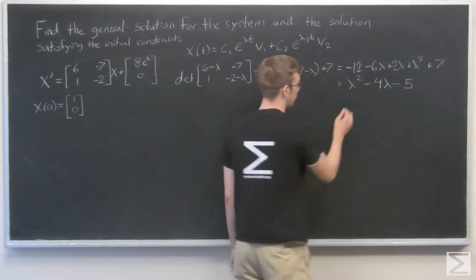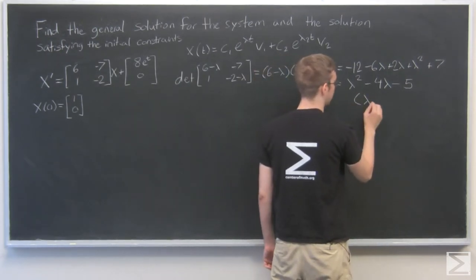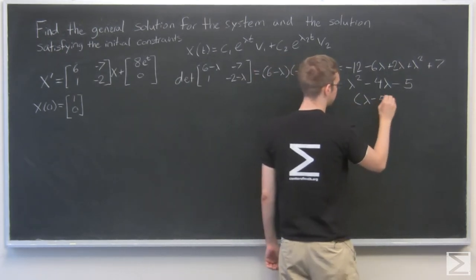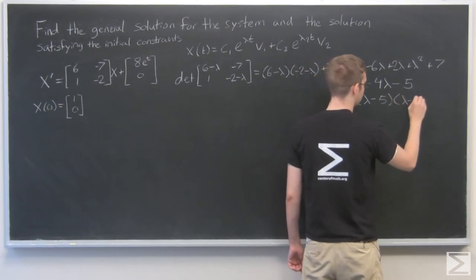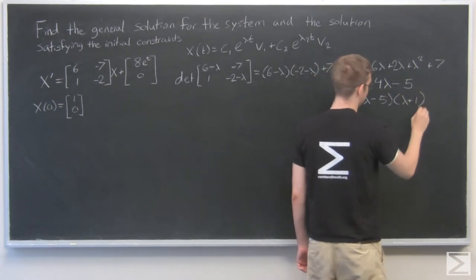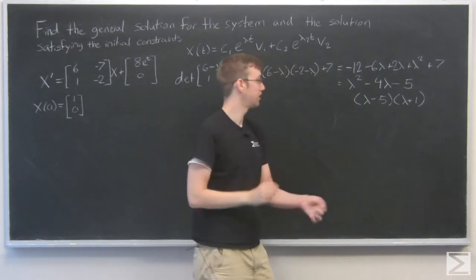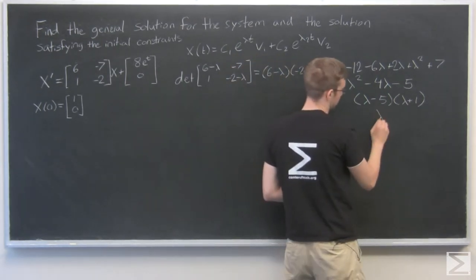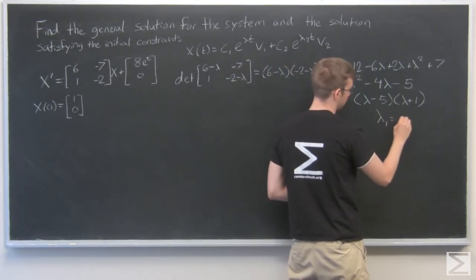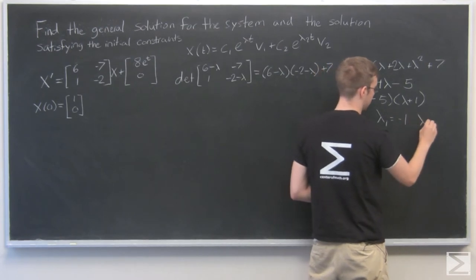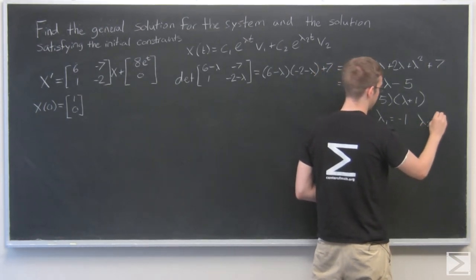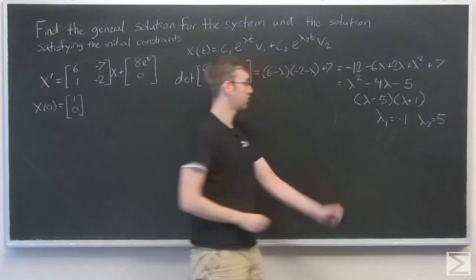I can factor this: (lambda - 5)(lambda + 1). And that gives me lambda_1 is -1, and lambda_2 is 5.